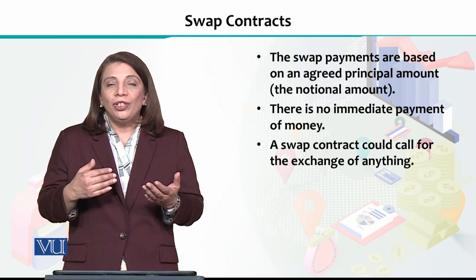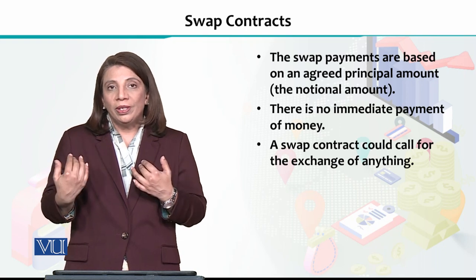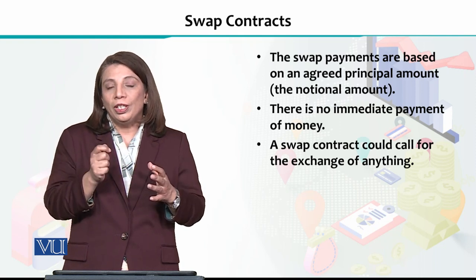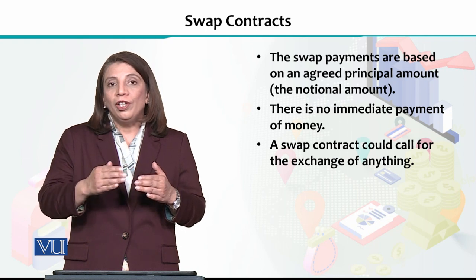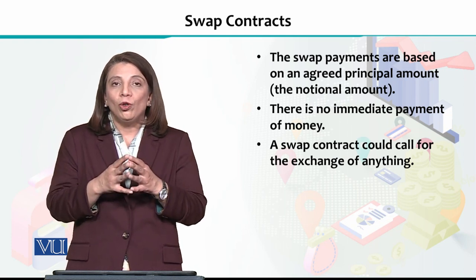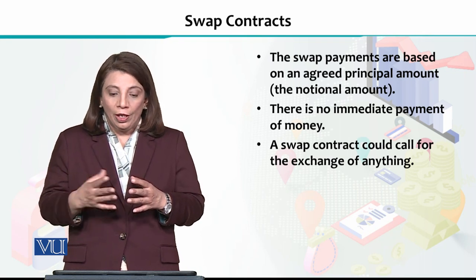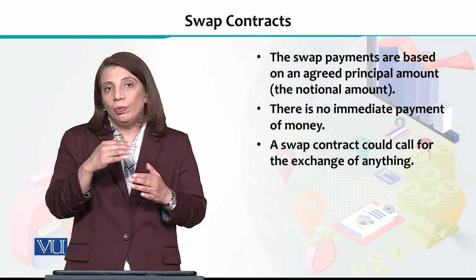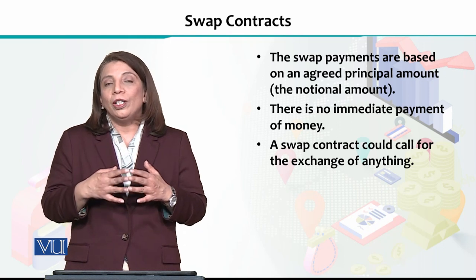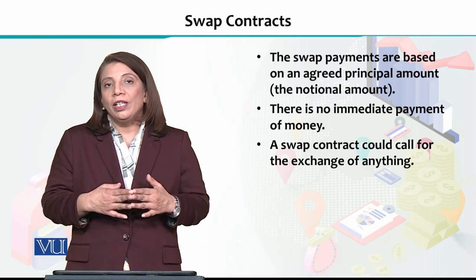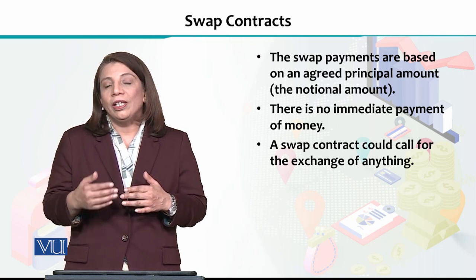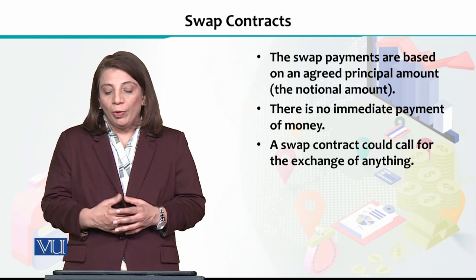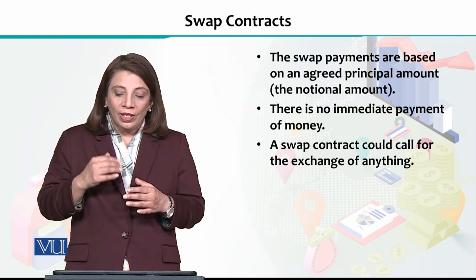In swap contracts, there is a swapping of payments involved. There is a certain principal amount which is decided to be paid at different intervals. This principal payment amount is also called the notional amount in swap contracts.